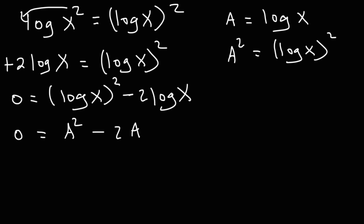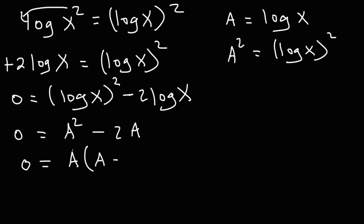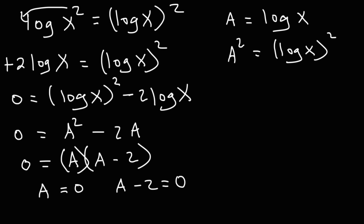So we replace log x squared with a squared and log x with a, giving us negative 2a. Now we factor the GCF — the greatest common factor. We factor out a: a squared divided by a is a, and negative 2a divided by a is negative 2. Using the zero product property, we set each factor equal to 0: a equals 0, and a minus 2 equals 0. For the second equation, we add 2 to both sides.